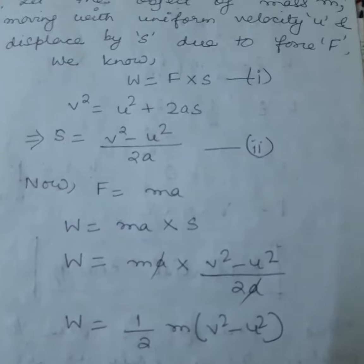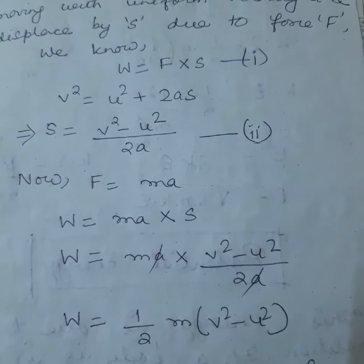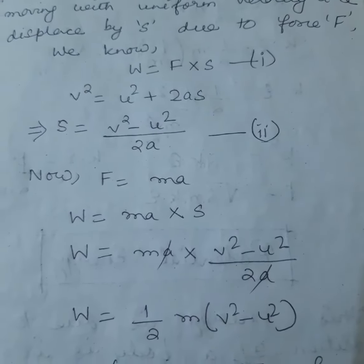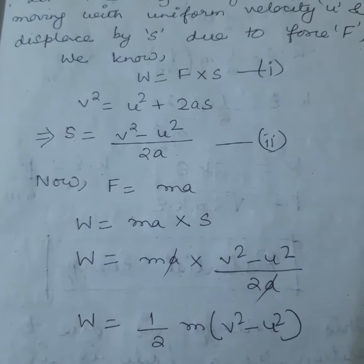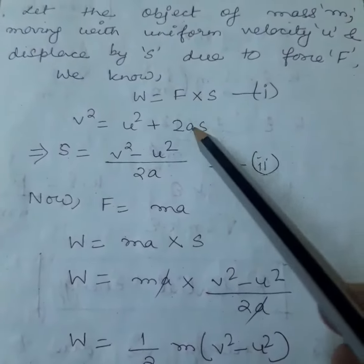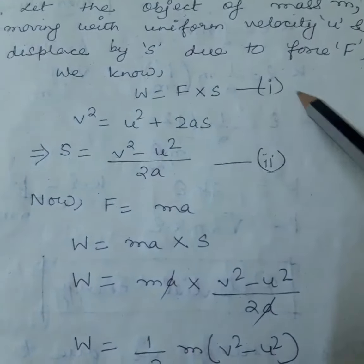Now, from the work chapter we know that the formula for work done is equal to force into displacement. So W is equal to F into s. Put this as equation 1.